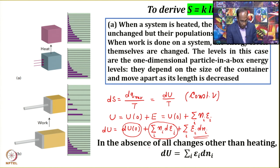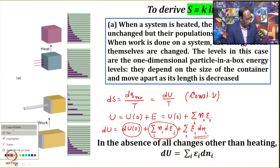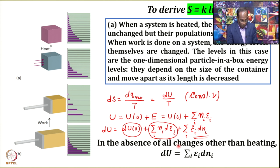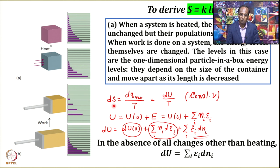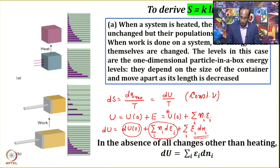So in the absence of all changes other than heating, we have established that dU equals the summation of εᵢ·dnᵢ. Since dS equals dU/T at constant volume, we obtain dS equals (1/T)·Σεᵢ·dnᵢ.